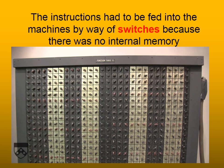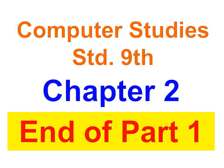In ENIAC, the instructions had to be fed into the machine by way of switches because there was no internal memory. So we end this video here — Chapter 2, Part 1. Hope you enjoyed watching the video and were able to learn properly, because I have tried to explain with the help of images and video instead of simply reading the content from the textbook.